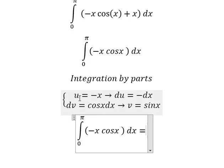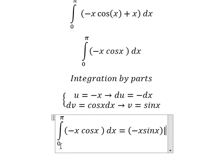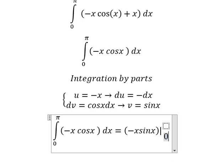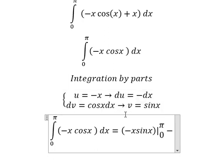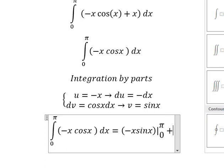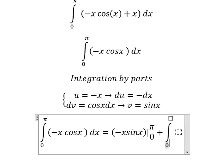So we have u multiply by v, and then we put the bounds from zero to π. Minus we have u multiply by v, so negative and negative we have positive, and we have the integration from zero to π.